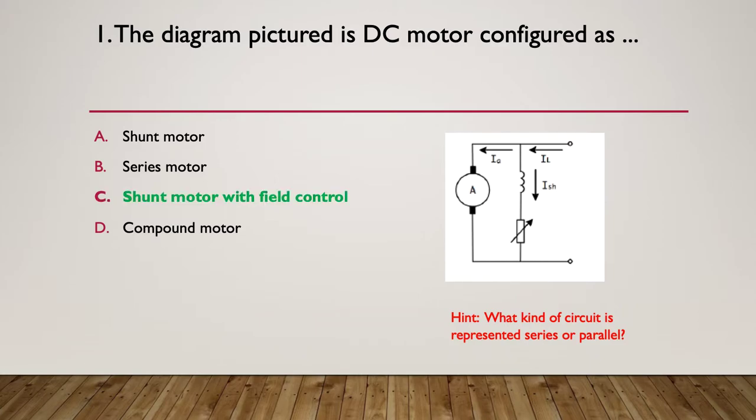So this is a shunt motor with field control. You can see it's shunt because we've got a parallel path for the shunt of the current through the shunt field and we've got a variable resistor in series meaning we can control the current through the field, therefore it's a shunt motor with field control.